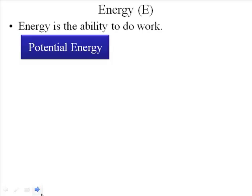There are two different forms of energy that we'll run into. The first is what's called potential energy. Like the name implies, it's really the potential for something to happen. Potential energy can be thought of as stored energy, like a battery stores energy.